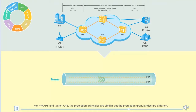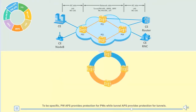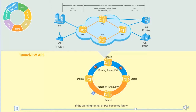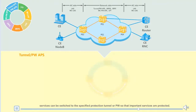PWAPS provides protection for tunnels based on the APS protocol. For PWAPS and Tunnel APS, the protection principles are similar, but the protection granularities are different. Specifically, PWAPS provides protection for PWs while Tunnel APS provides protection for tunnels. If the working tunnel or PW becomes faulty, services can be switched to the specified protection tunnel or PW so that important services are protected.